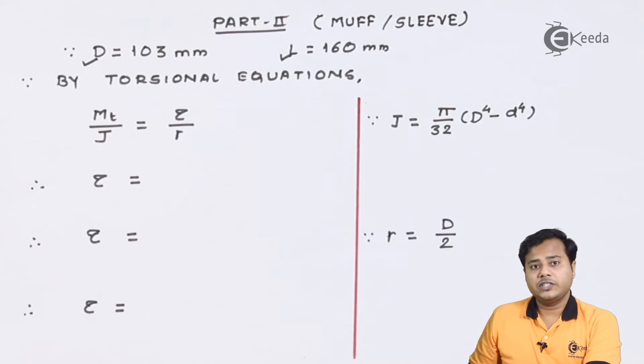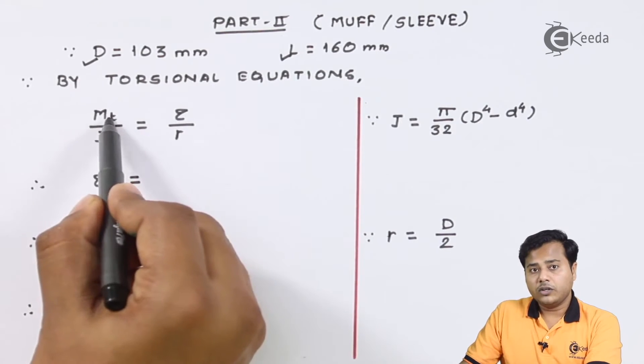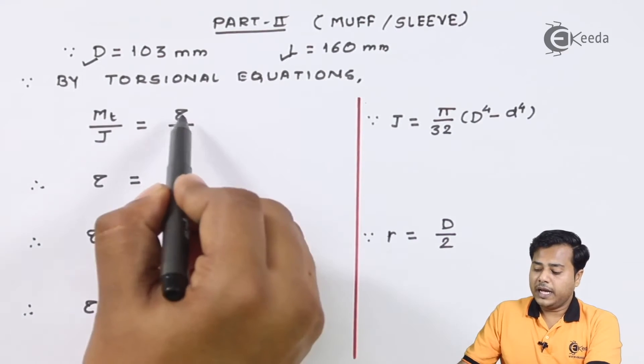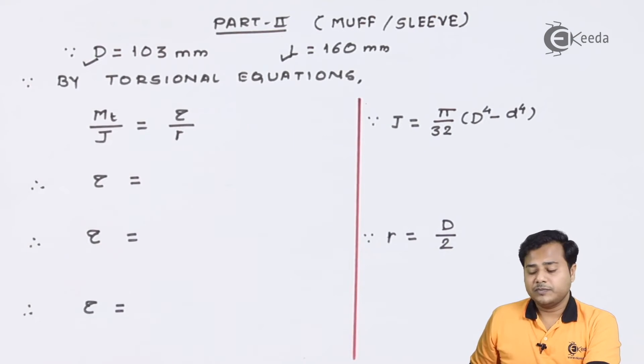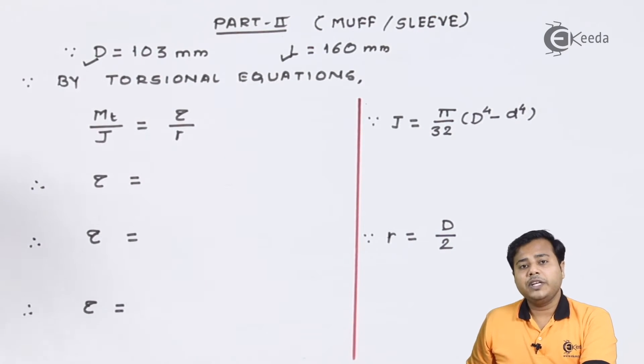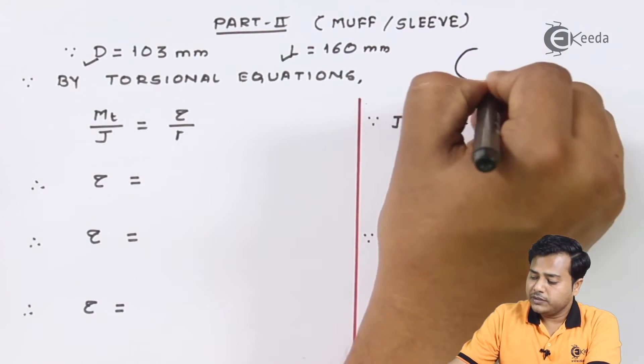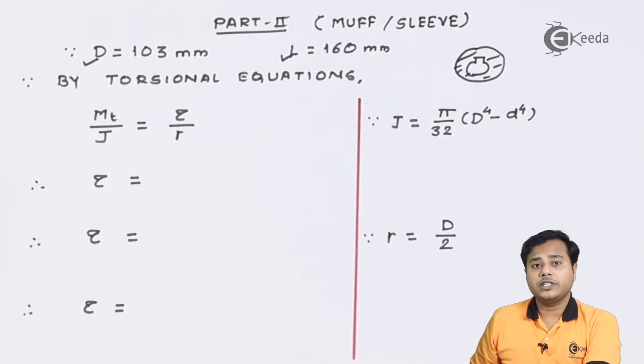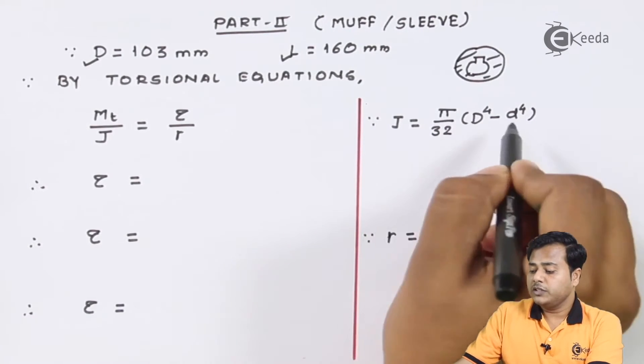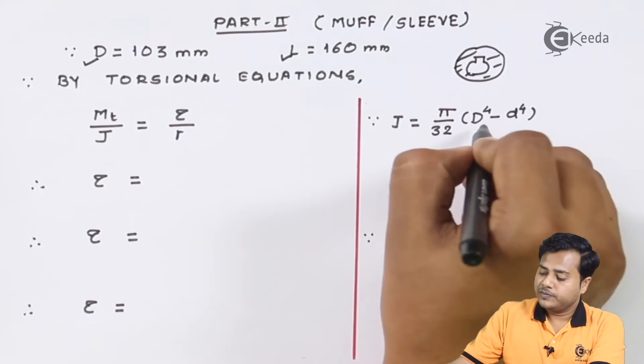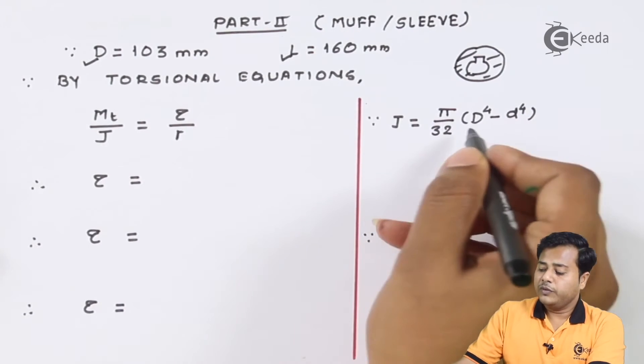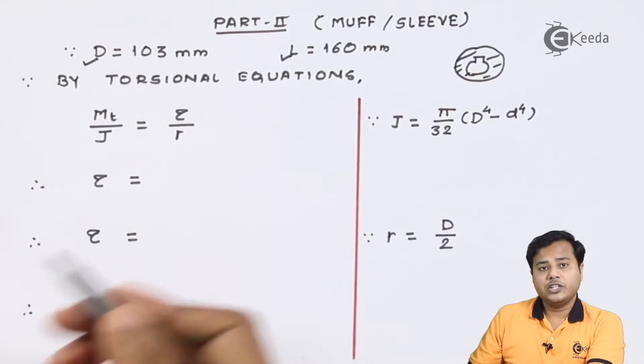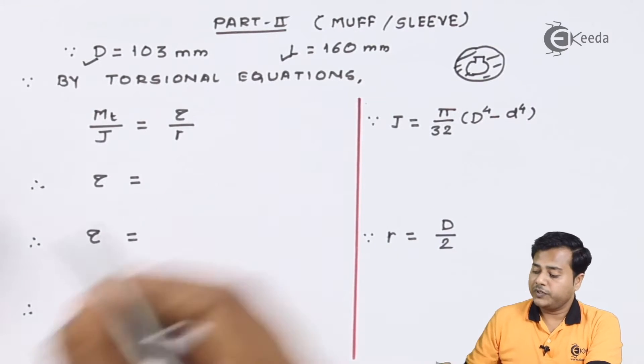We know that by torsional equations the relation between the torque moment and the shear stress is Mt/J = τ/R where J is your polar moment of inertia. The MUF being hollow in section, we must consider both diameters, and therefore when we substitute the values we will get the answer in relation with the polar moment of inertia.